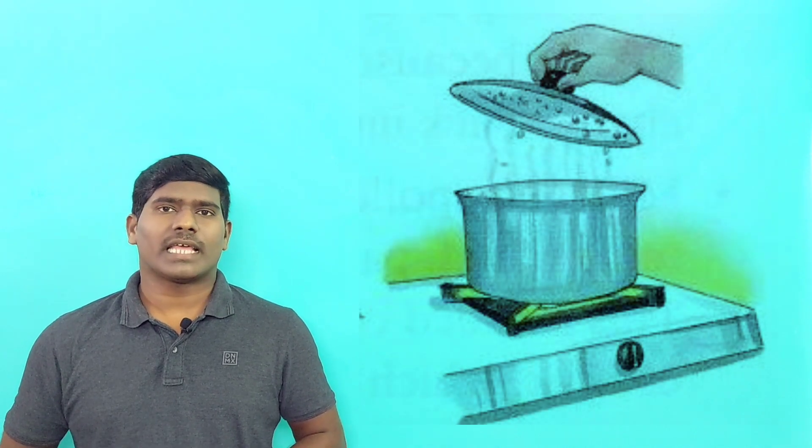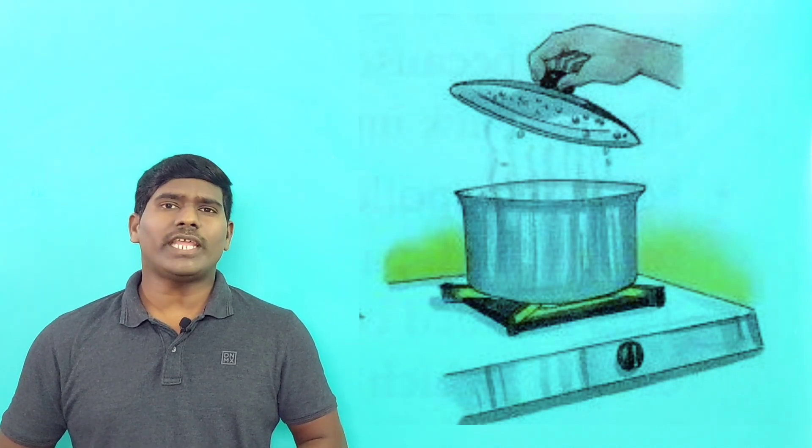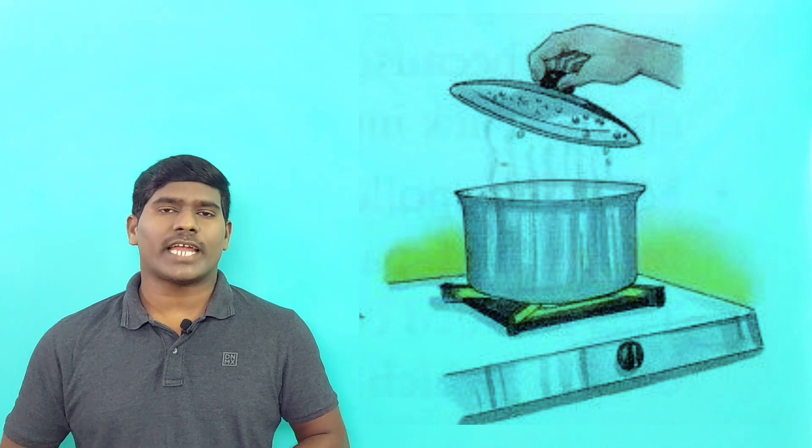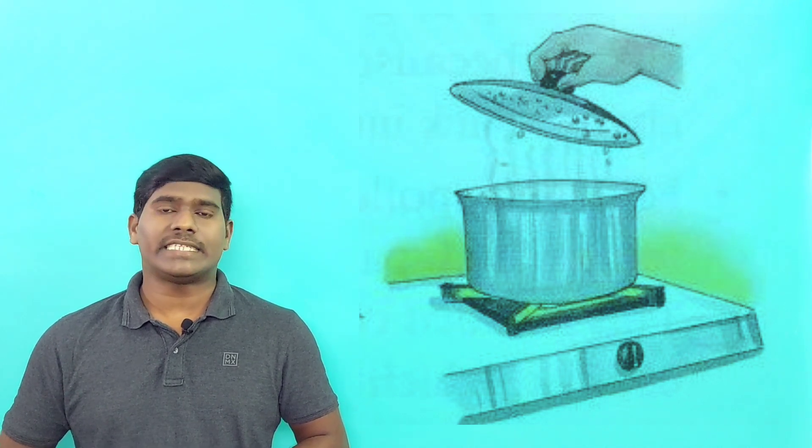For example, when we heat water in a vessel covering with a lid, we can notice vapors hitting the lid and trickling down at the boiling point of 100 degrees Celsius.